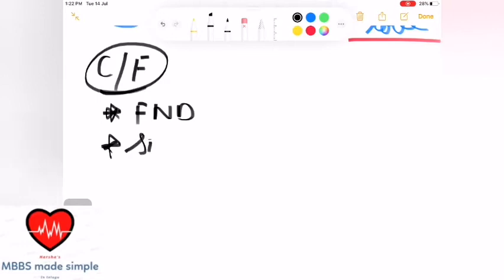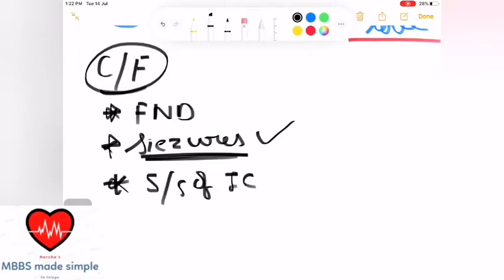Obviously brain is affected, so seizures - there's a chance of seizures. Next one is signs and symptoms of intracranial tension. Intracranial tension increases - blood release, infection, abscess forms, pus forms, so tension increases. The effects include headaches.